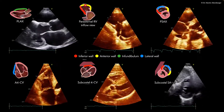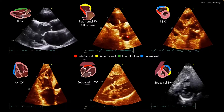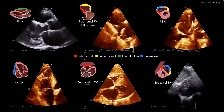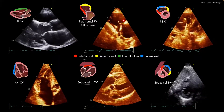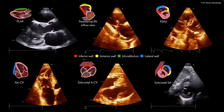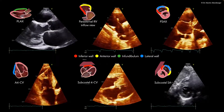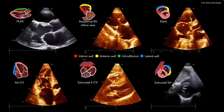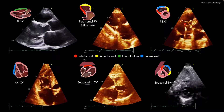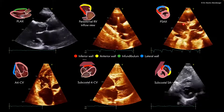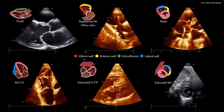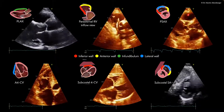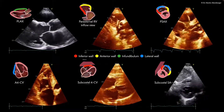In this view, we have the parasternal view with the inflow of the right ventricle — this is the right atrium, this is the right ventricle, and we do see the right ventricle is definitely dilated. Furthermore, there is a problem with the tricuspid valve; we will discuss this patient a little bit later. We can see parts of the right ventricle and the tricuspid valve — the pacemaker lead is hypermobile. The right ventricle is dilated and the function is reduced as well.